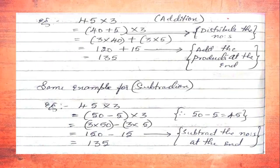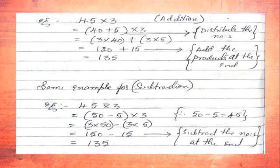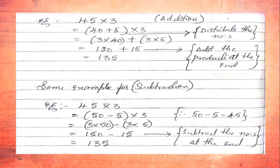Next, the same example using subtraction. We consider 45 × 3. For subtraction, we write 45 as 50 − 5, because 50 − 5 = 45. So the number 45 is distributed as 50 − 5 using subtraction.